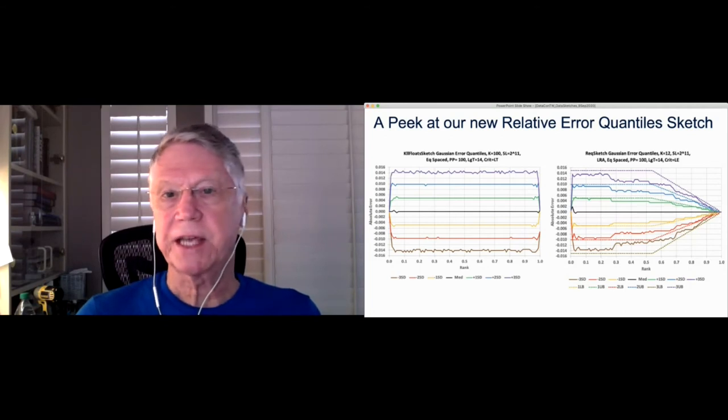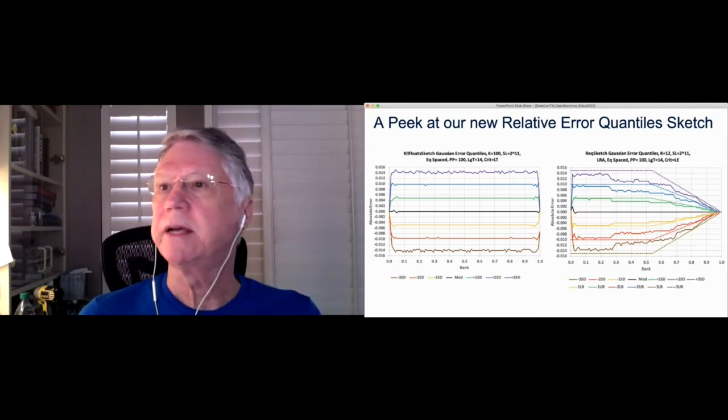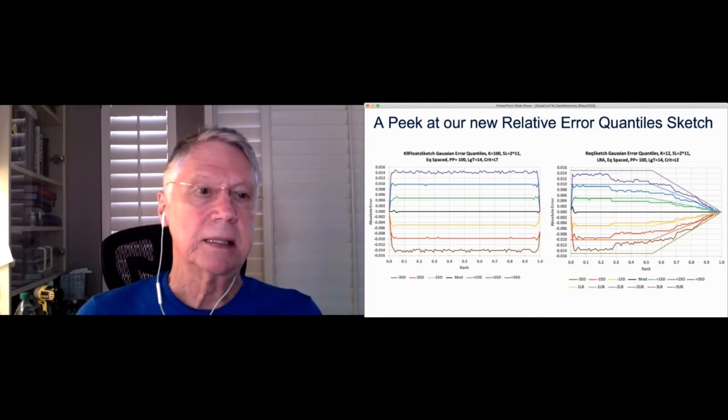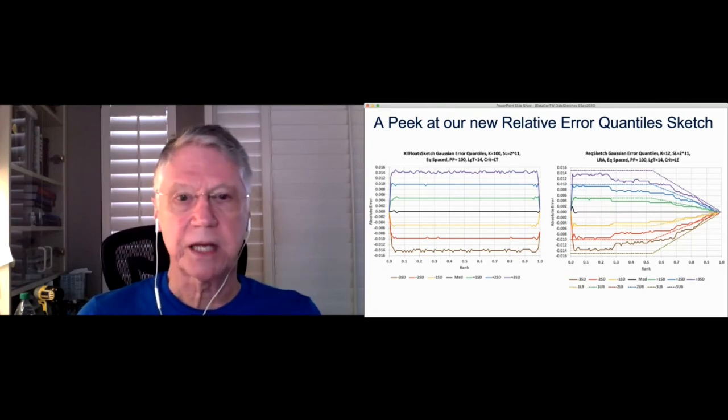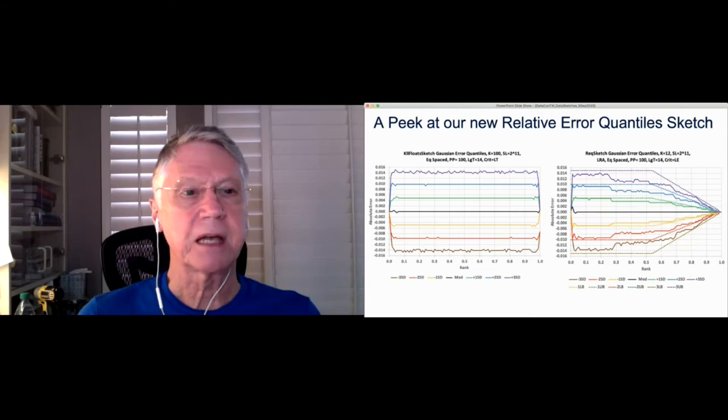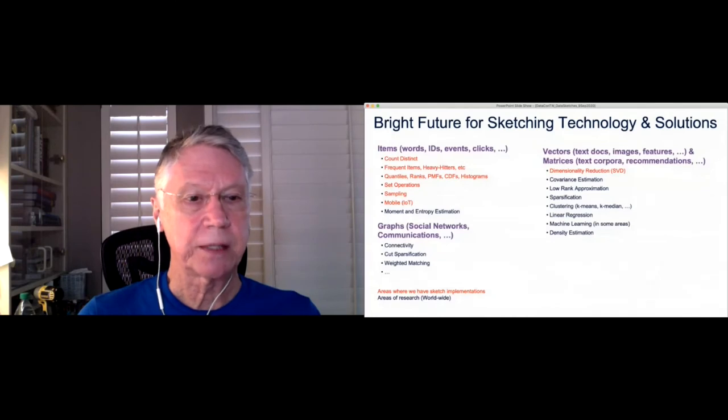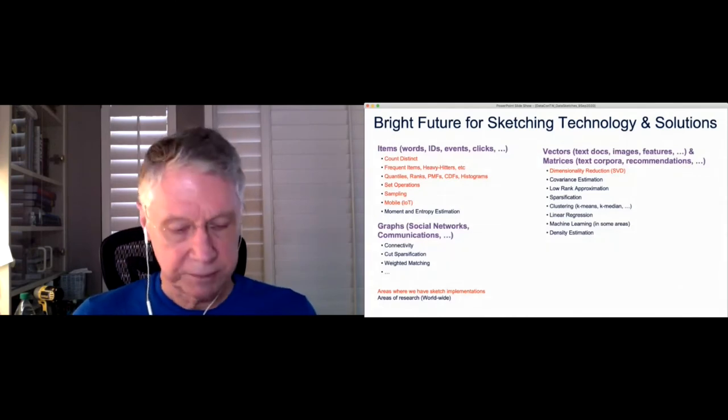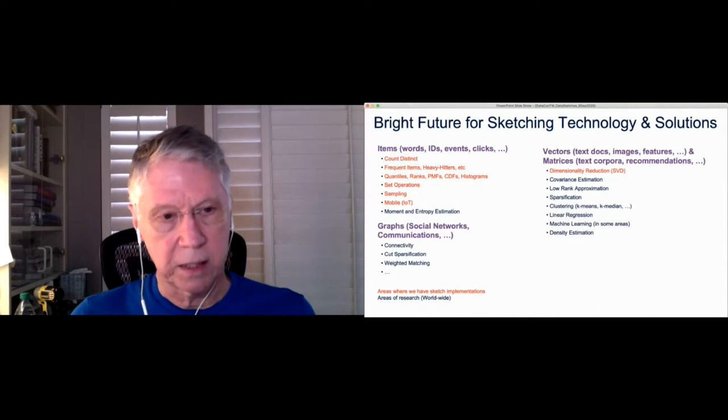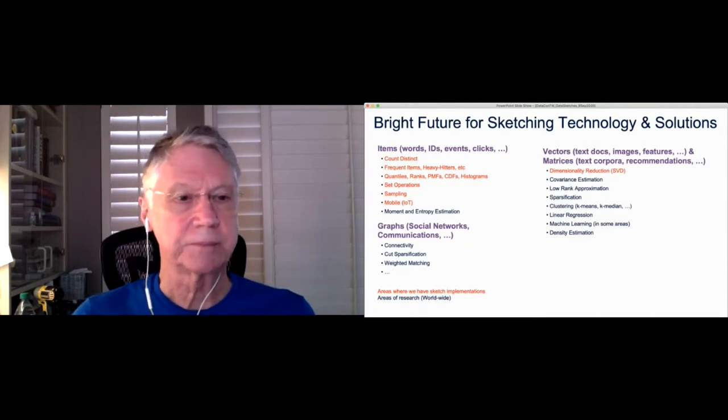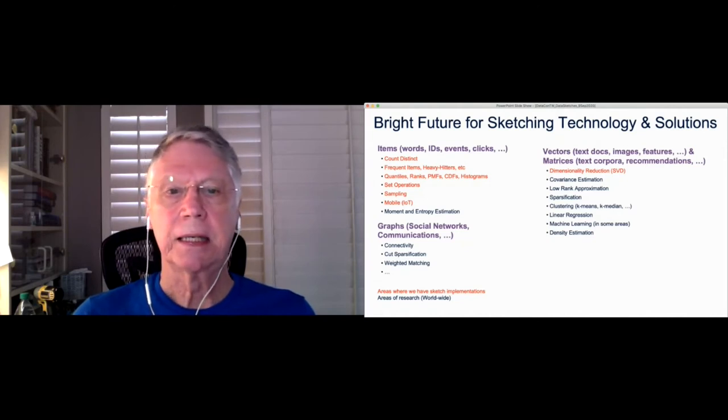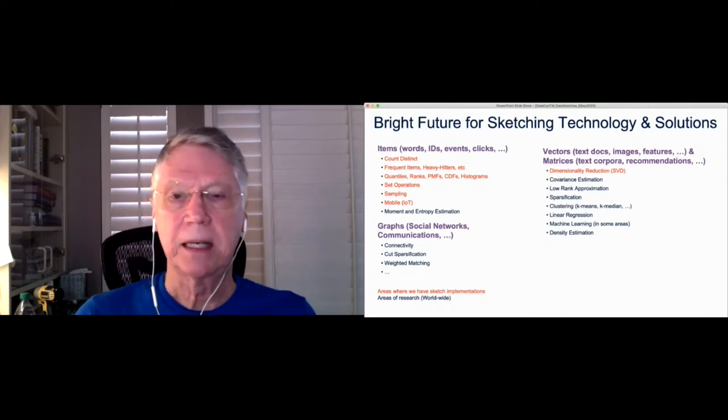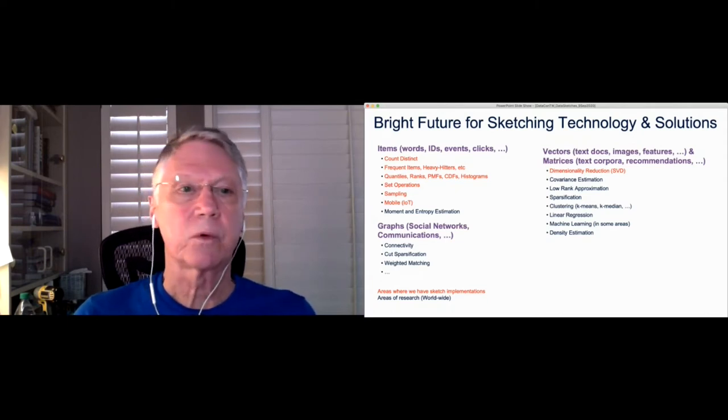There's a bright future for sketching technology and solutions, which we show here in red is areas where we've addressed sketching already, like in count distinct frequent items, heavy hitters, quantile ranks, set operations, sampling and so on. But there are other areas where we're still waiting for some contributions in connectivity, cut sparsification of graphs, covariance estimation, low rank approximation, sparsification, clustering, k-means, k-median. These are all areas that we're looking at for the future.